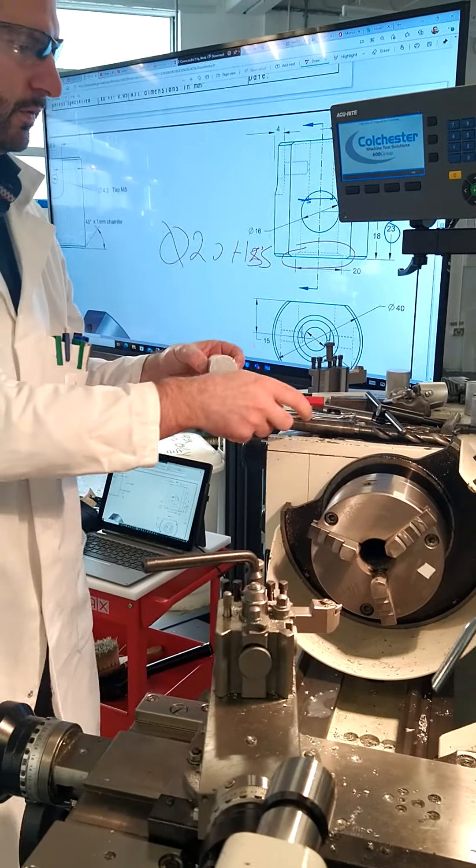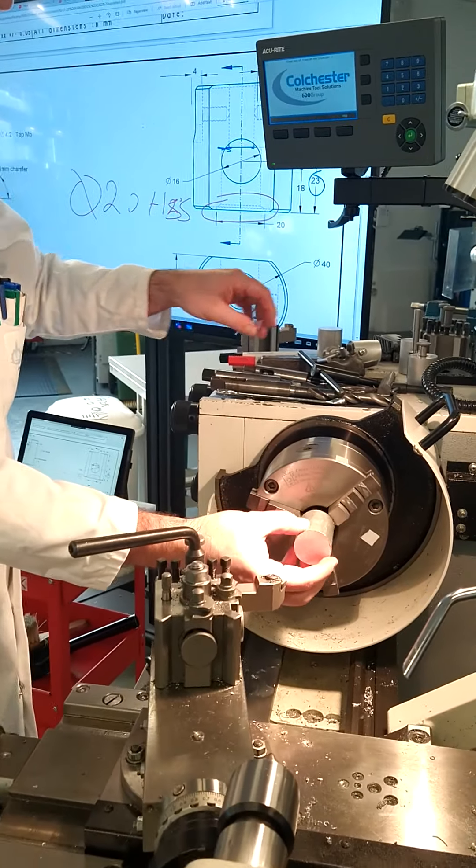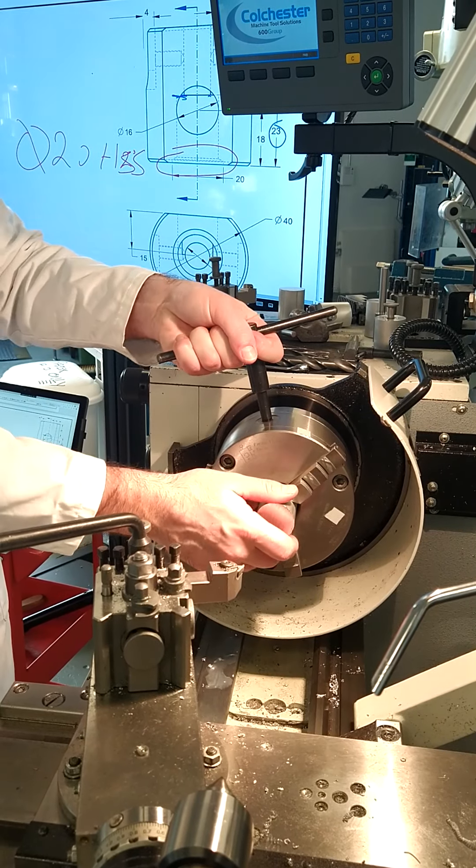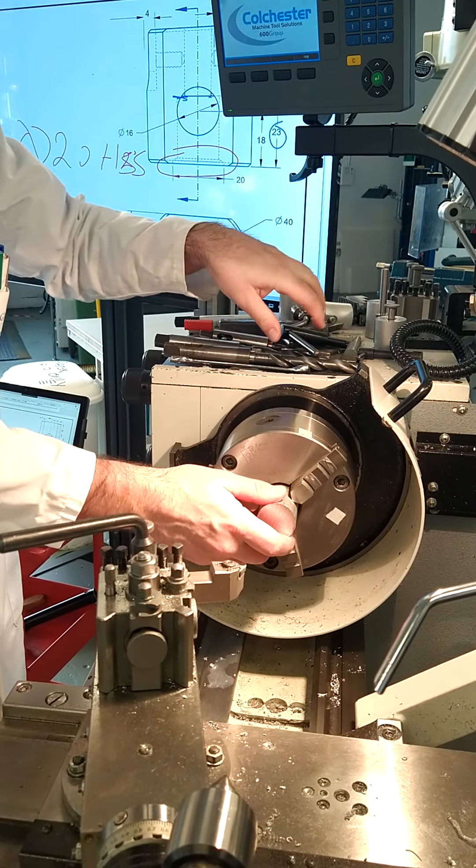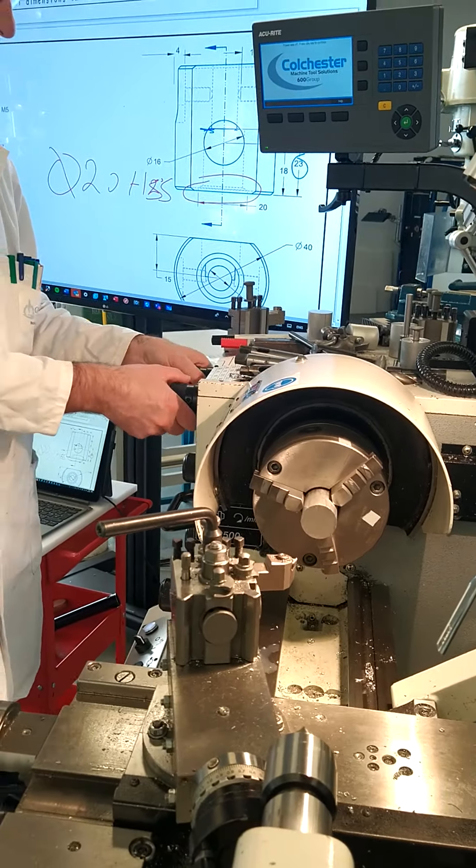I'm going to leave the coolant off just for video purposes, so it's easier to work with. So put the part in, allowing the overhang at about the width of your thumb, which is about 30 millimeters hanging out from the chuck. Tighten it up. Put down the guard. And set our chuck speed to about 1200 RPM.